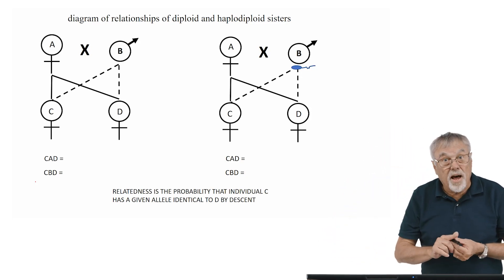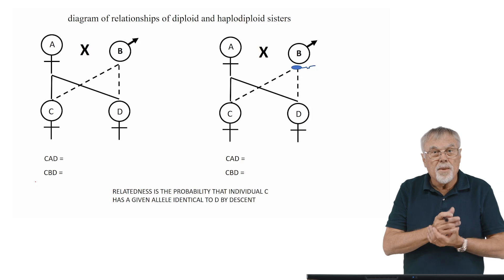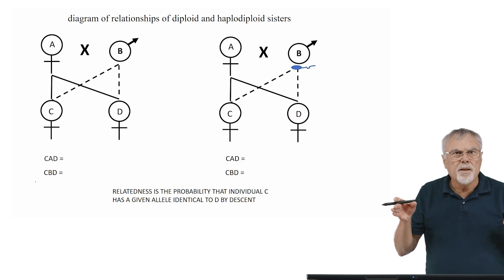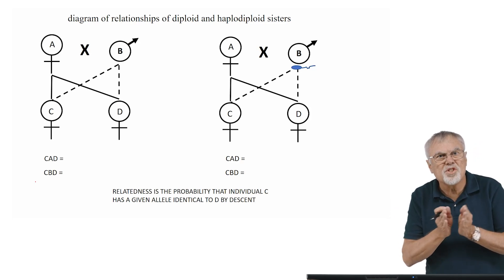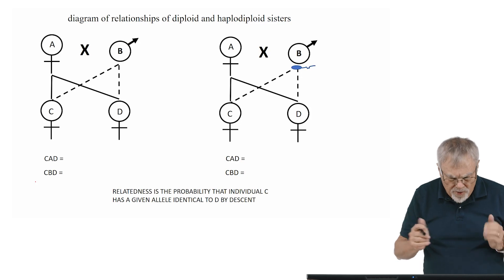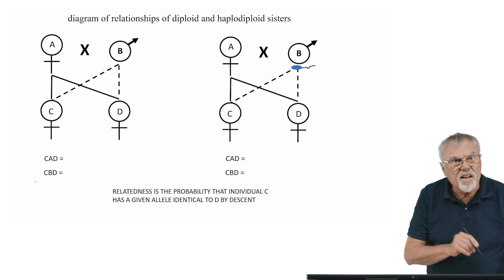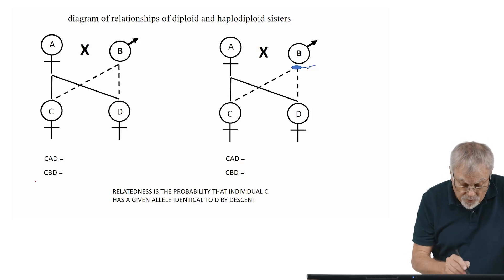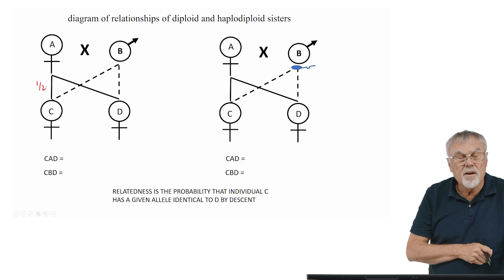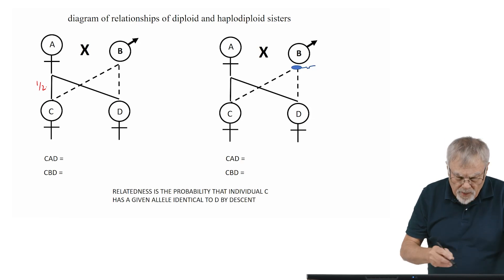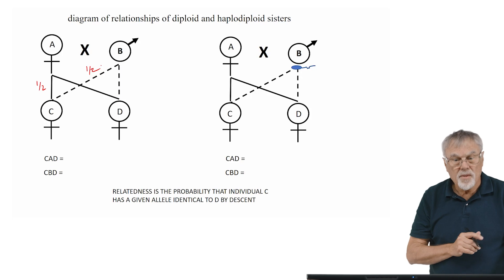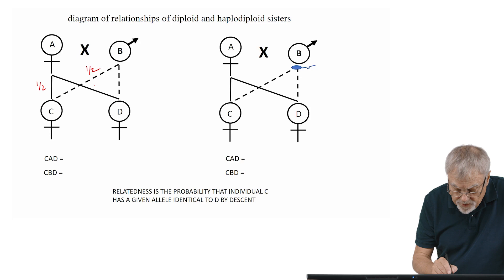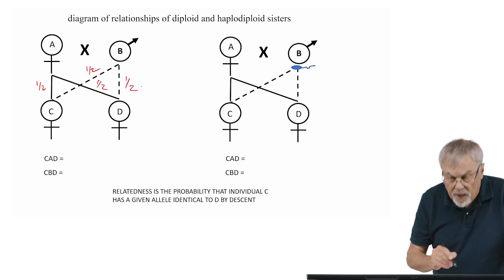Let's start with the left and look at the probabilities of inheriting any particular allele into the two sisters, C or D, coming from the mother or father. For any given allele at any given locus for individual C, the probability is one half that it came from the mother and one half that it came from the father. The same holds for individual D — one half from the mother and one half from the father.